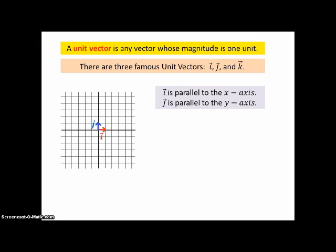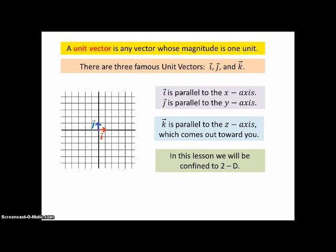Now remember, a vector doesn't have a location, actually. You can move it around as long as you don't change its length or direction. So i can be drawn anywhere parallel to the x-axis one unit long, and j can be drawn anywhere one unit long parallel to the y-axis. k is parallel to the z-axis, which comes out towards you. And in this lesson, we're going to be confined to two dimensions. Next lesson, we'll be doing three-dimensional ones.